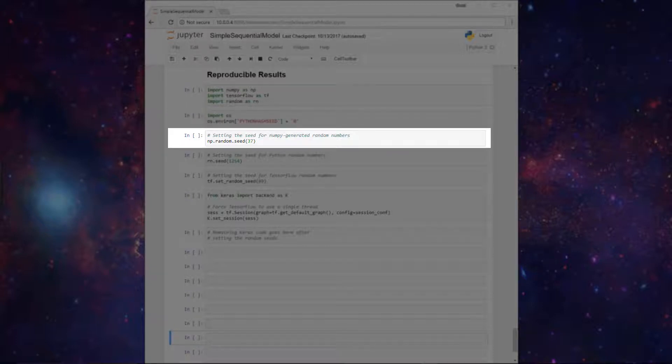But directly after this we now set our random seed for NumPy like so. And I've specified 37 here as my random seed, but you can use any int that you'd like.